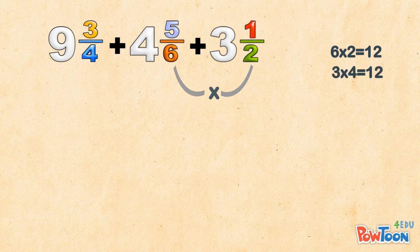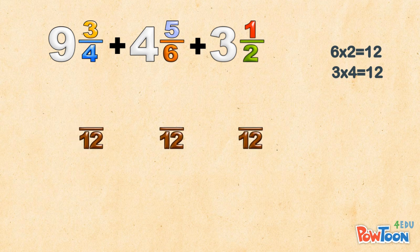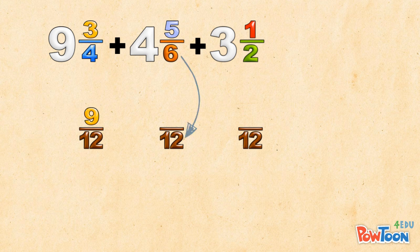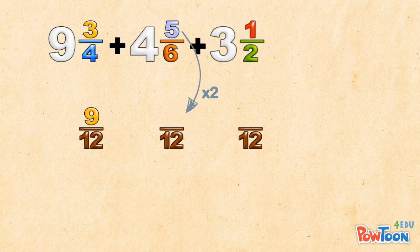To turn 4 into 12, we multiply by 3, so we do the same for the numerator. 3 times 3 is 9. And for 5 sixths, to turn 6 into 12, we multiply by 2, so same up top. 5 times 2 is 10. And to turn 2 into 12, we multiply by 6. Same again for the numerator. And our answer will be some number over 12.